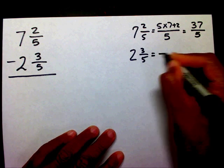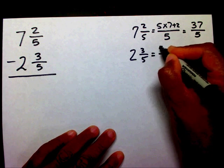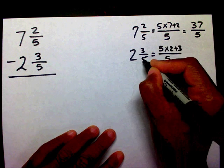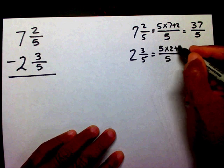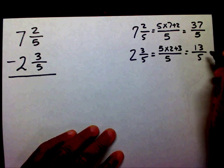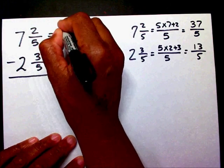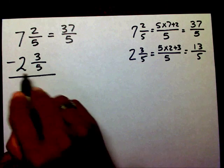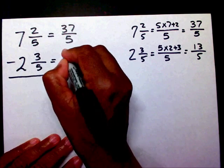Then over here, I'm going to bring my five over. Five times two plus three — five times two is ten, plus three is thirteen-fifths. So I just changed my seven and two-fifths into thirty-seven-fifths, and I changed my two and three-fifths into thirteen-fifths.